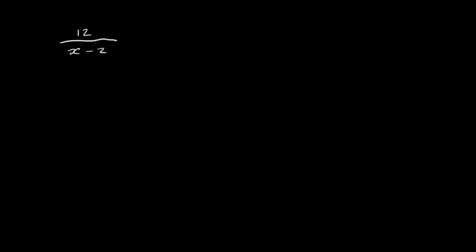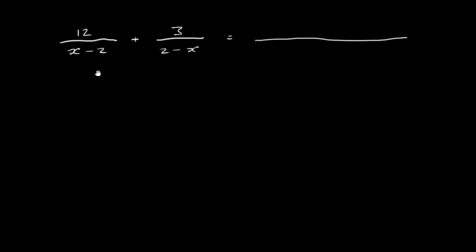One more example: 12 over x minus 2, and we're going to add 3 over 2 minus x. We draw our division line and work out a common denominator. If you can spot that this is x minus 2 and this is 2 minus x — they're both the same except the signs are different for each term. Here we have plus x, there minus x; here minus 2, there plus 2.